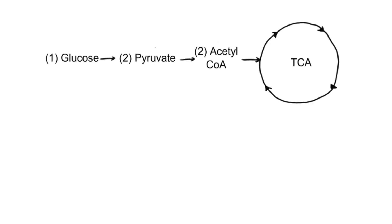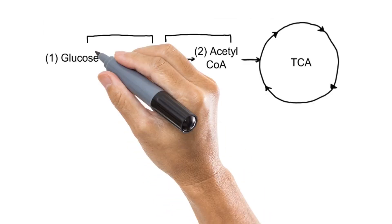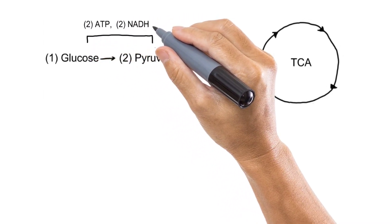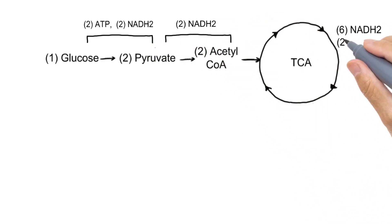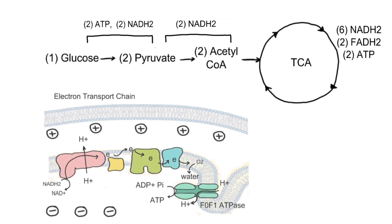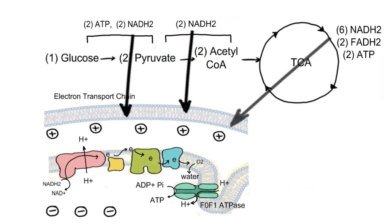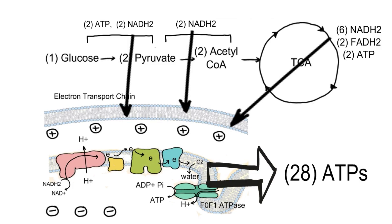To summarize: we eat food containing glucose. One glucose molecule is converted into 2 pyruvate, then into 2 acetyl-CoA, and then acetyl-CoA is oxidized in the TCA cycle. During glycolysis we get 2 ATPs and 2 NADH2; in the second phase we get 2 NADH2; during TCA we get 6 NADH2, 2 FADH2, and 2 ATPs. All the NADH2 and FADH2 are oxidized in the electron transport chain, generating 28 ATPs. Adding the 4 from earlier gives a total of 32 ATPs.